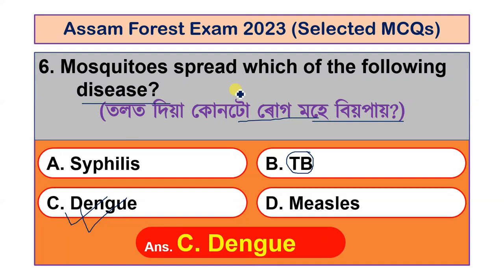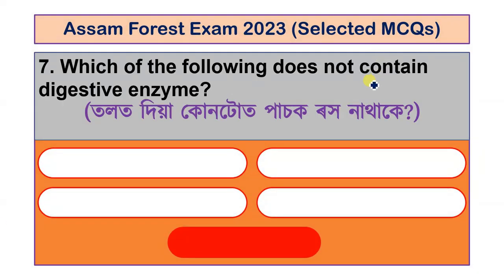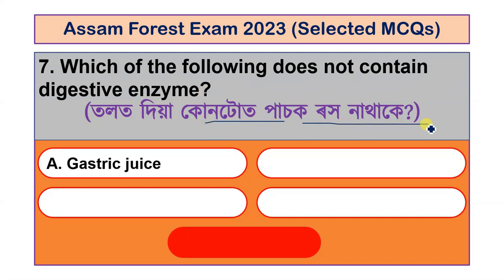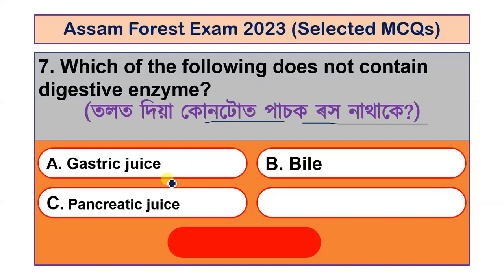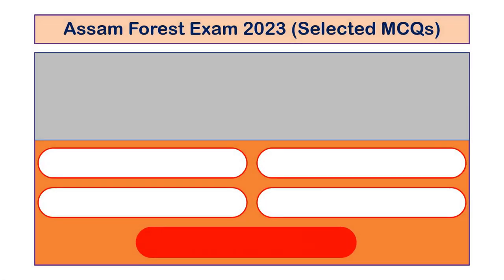Question number 7: Which of the following does not contain a digestive enzyme? Options are gastric juice, bile, pancreatic juice and saliva. The answer is option B, bile.